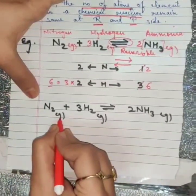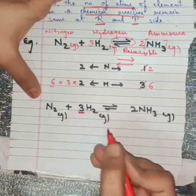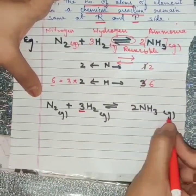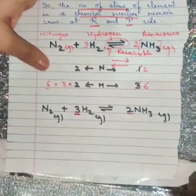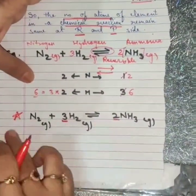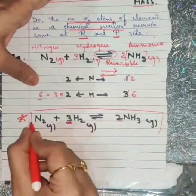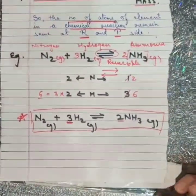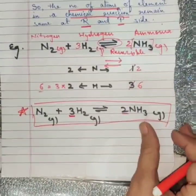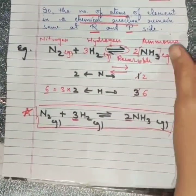Nitrogen with its physical state, hydrogen with its physical and balanced state, and similarly ammonia with its physical and balanced state are all mentioned. This is how we write a complete balanced chemical equation. This is just the beginning — we can practice some more chemical equations to understand it better.